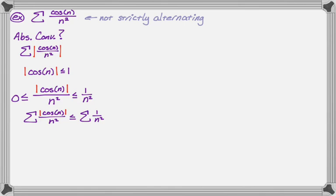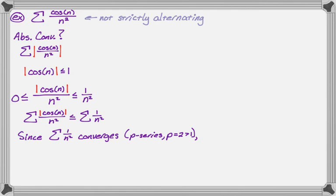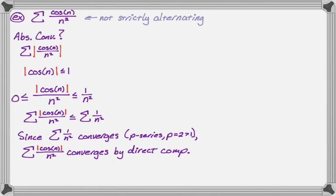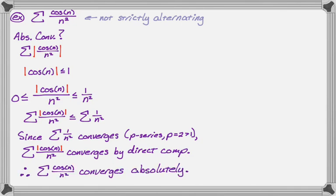Since the sum of one over n squared converges — I know that because it's a p-series with p equal to two, which is greater than one, so it's a convergent p-series — because of my inequalities, the sum of the absolute value of cosine of n over n squared converges by direct comparison. And since I've shown that, the original series — the sum of cosine of n over n squared — converges absolutely, because when I took the absolute value of the terms I got a convergent series.